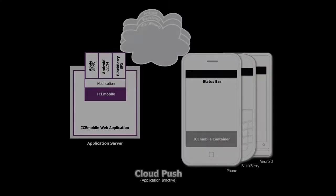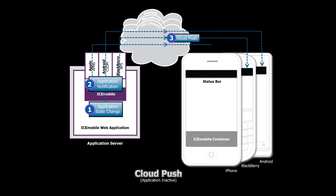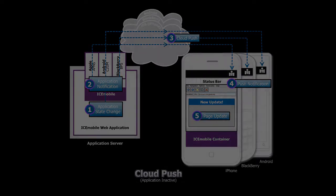With our AJAX push connection severed, we can go through the cloud over an alternate connector and deliver a notification to the user when it's critical. These notifications will manifest themselves as symbols in the status bar, vibration, or some kind of sound. So no matter whether your user is active or inactive, you can always deliver critical notifications to them.